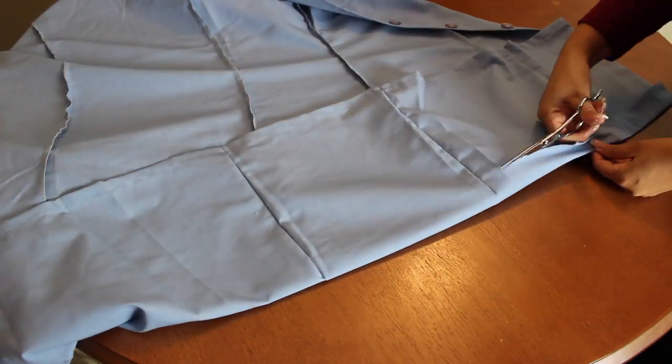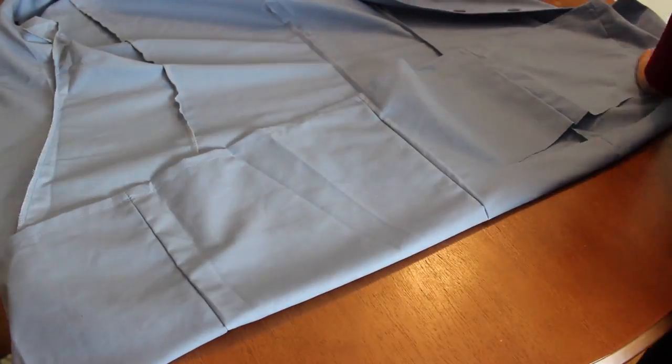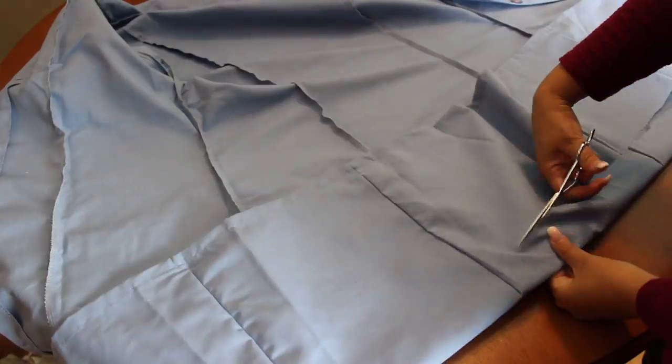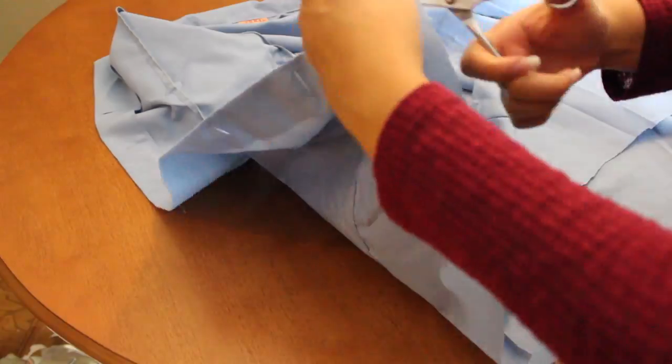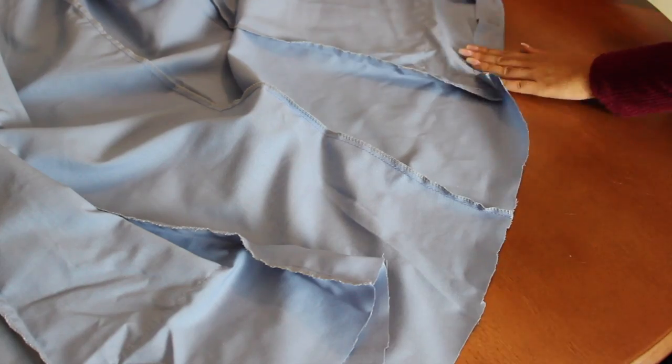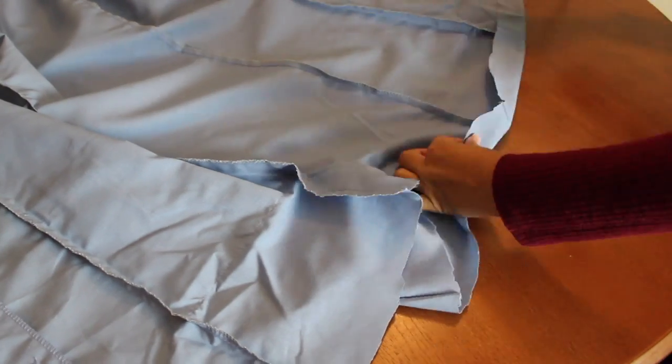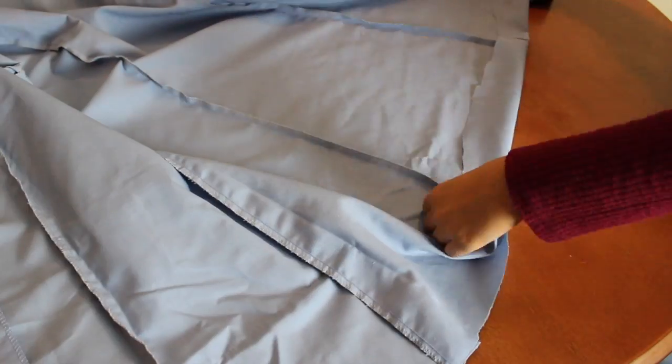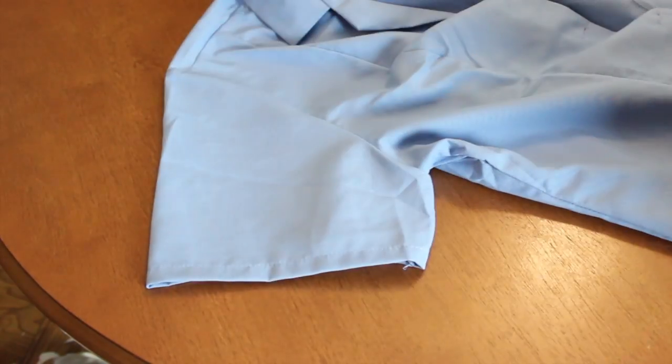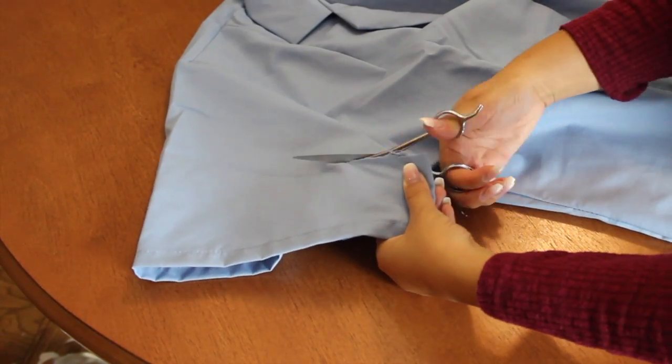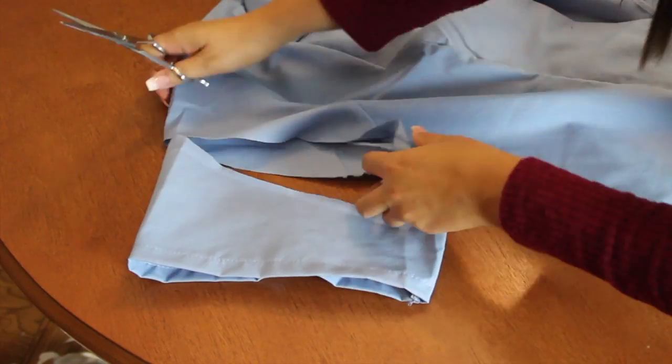Next up, we're going to get to work on our uniform. Off screen, I measured it to where I wanted it to hit, and then I cut off the rest. Then we're doing the same method of gluing an edge, just to make it look a bit more polished. The top also was a little bit too large for me, so I cut off the sleeves just to make it fit a little bit better.